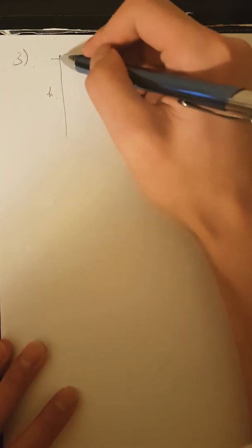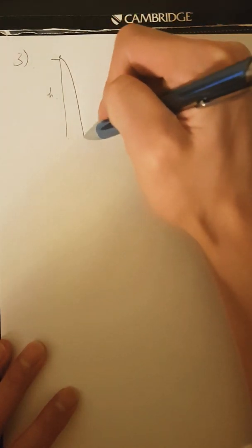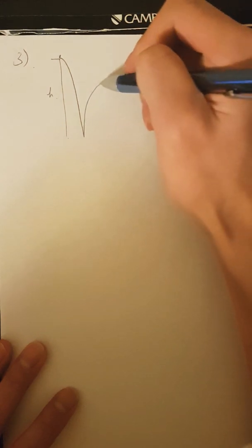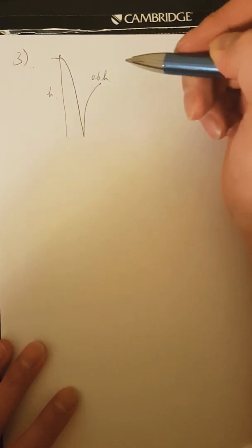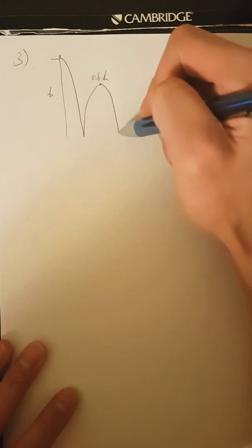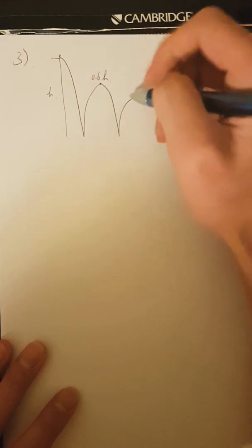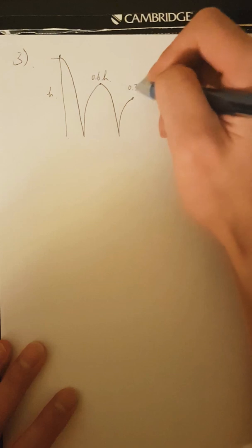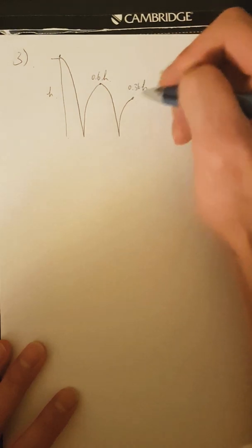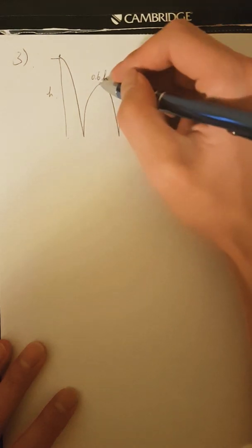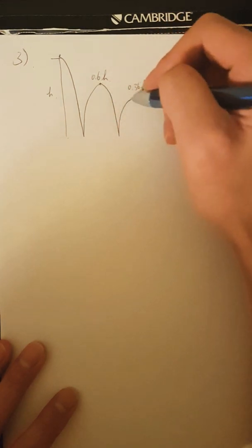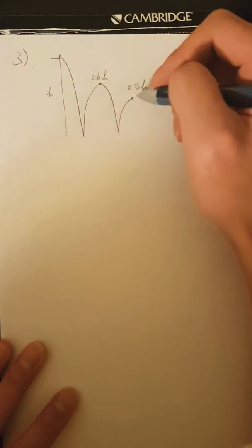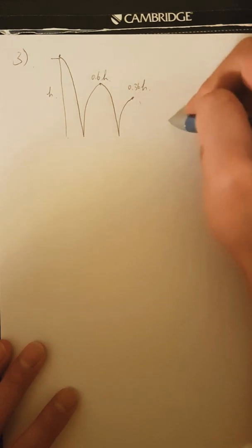If the height is H, then once it drops and bounces back up, this height is now going to be 0.6H. And then once it drops again and bounces back up, this is going to be 0.36H, because it's going to be 60% of the height it falls off from, which is 0.6H. So 0.6 times 0.6 is going to be 0.36. And then this is going to continue.